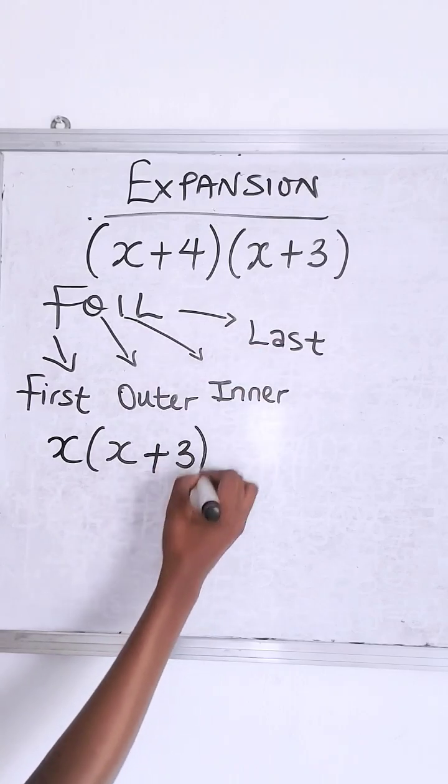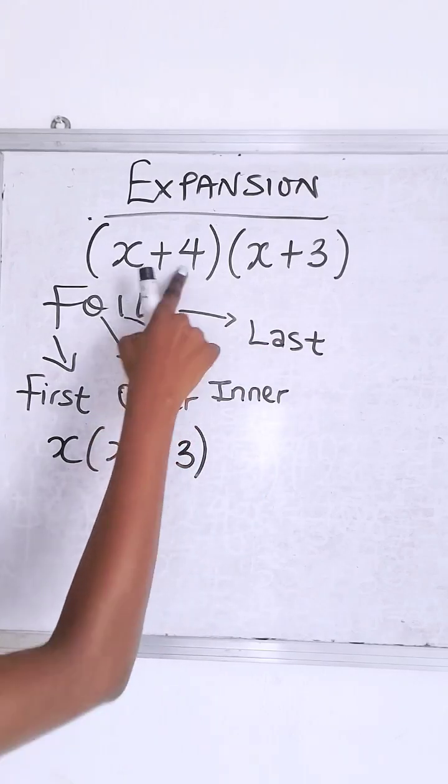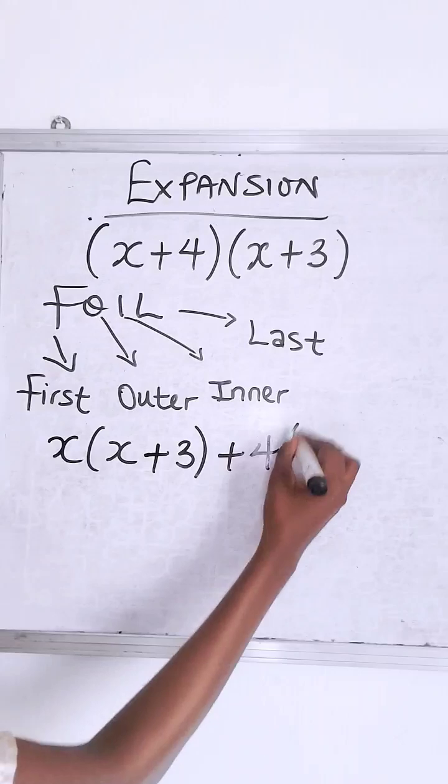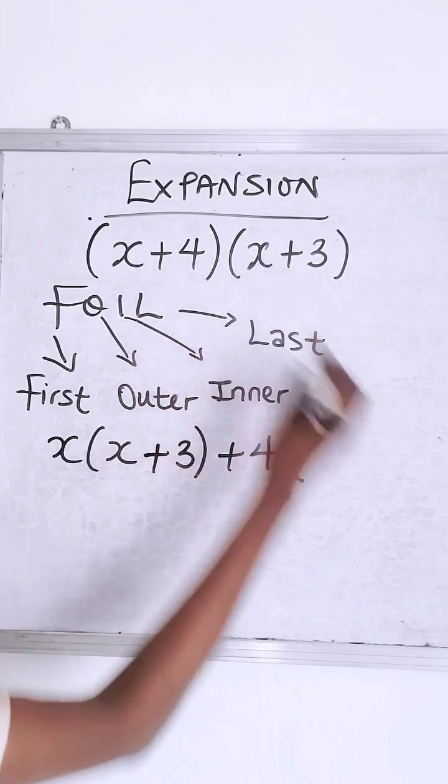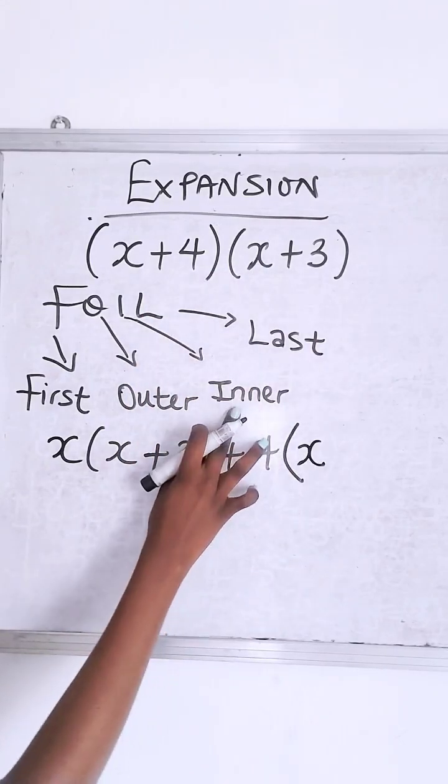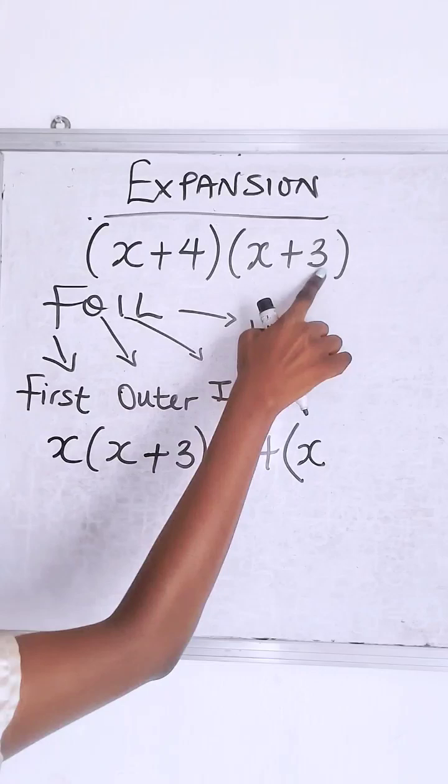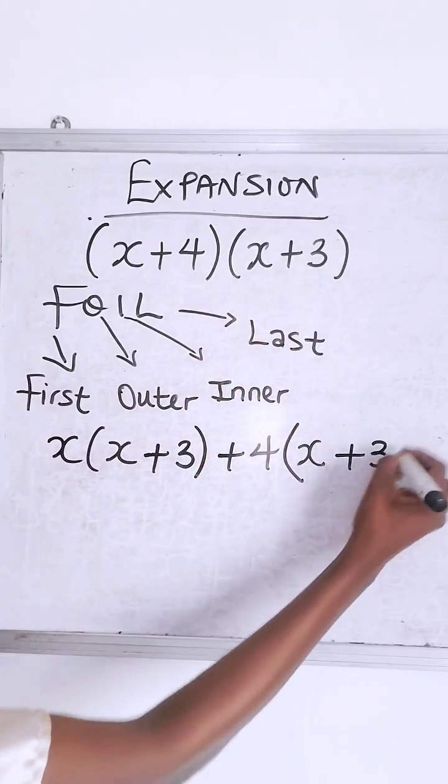The second term represents outer. Picking the second term in the first one, multiplying this means inner, and then picking this to multiply the last means last.